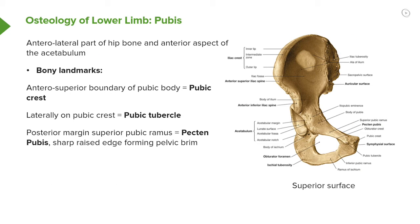Looking at some bony landmarks on the pubis: on the anterosuperior border of the pubic body, we find the pubic crest. Laterally on the pubic crest, we have the pubic tubercle. The posterior margin of the superior pubic ramus is known as the pecten pubis, which is a sharp raised edge that forms the pelvic brim. So the key landmarks are the pubic crest, the pubic tubercle, and the pecten pubis.